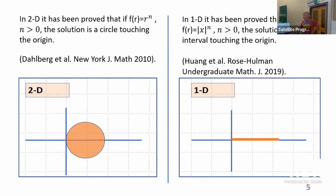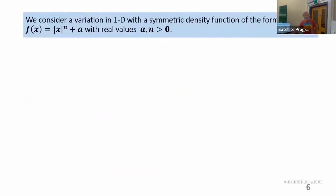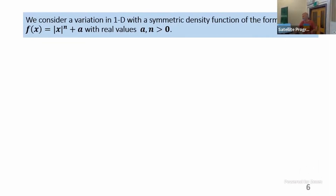In 1D, if you've got a symmetric density function |x|^n with n positive, the outcome is an interval that touches the origin. It seemed a little unrealistic to have a density function that took zero at the origin, so what we're looking at is a variation on this. To start with, we're going to work in 1D because I can do the maths and we get some nice results, and then we look at 2D later.